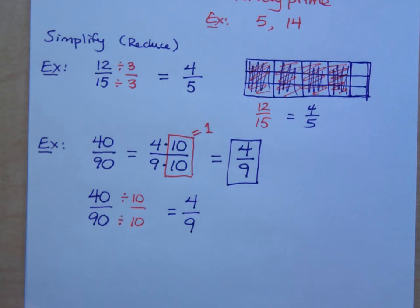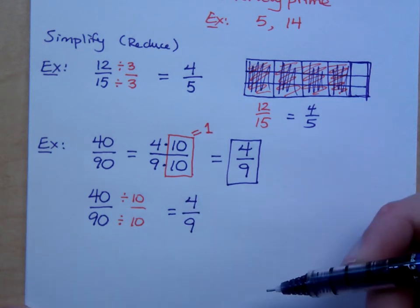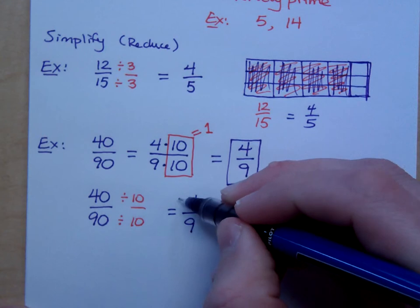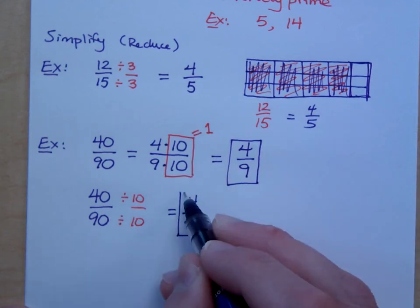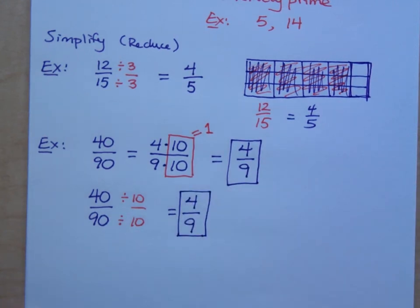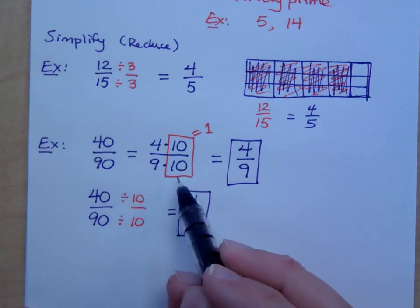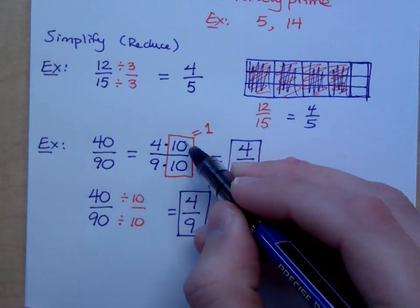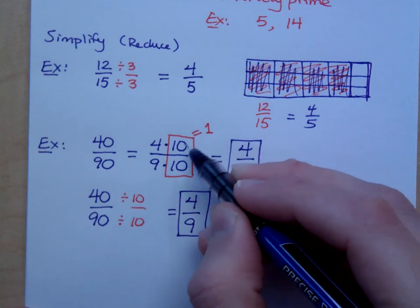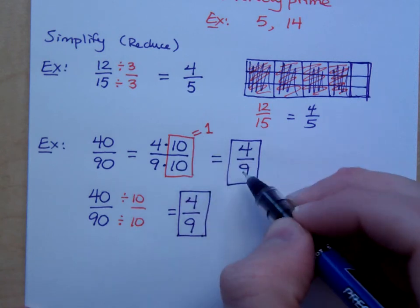4 over 9 is in lowest terms because is there a number that goes into both 4 and 9? No. So that's it. Now, the reason I showed you this right here is because we're going to be seeing this a lot more. You guys will look at this and go, 10 over 10 is 1, these reduce and you just get 4 over 9.